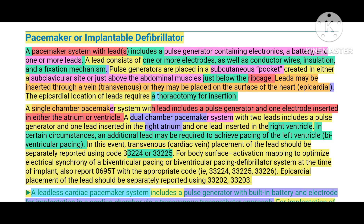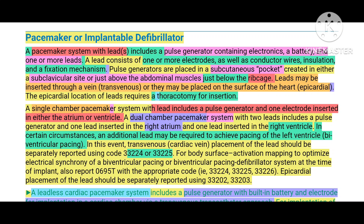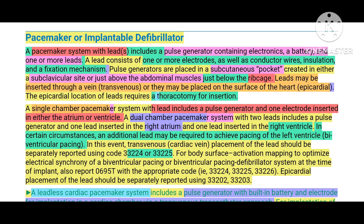The types of pacemakers are: single chamber or single lead pacemaker, dual chamber or dual lead pacemaker, and multiple lead or multiple chamber pacemaker. With a single lead, the lead is placed on one chamber of the heart; with dual lead, two leads are placed on two chambers; with multiple lead, leads are placed in three or all four chambers. There is also a leadless pacemaker, where the pacemaker electrode is directly placed on the heart without any lead.